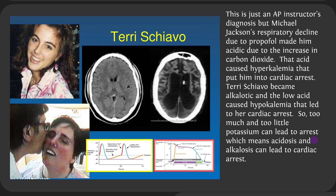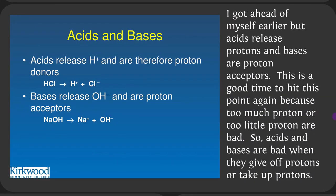As a clinical example: Michael Jackson's respiratory decline due to propofol made him acidic due to increased carbon dioxide. That acid caused hyperkalemia, putting him into cardiac arrest. Terry Schiavo became alkalotic, and the low acid caused hypokalemia, leading to her cardiac arrest. Too much and too little potassium can both lead to cardiac arrest, which means acidosis and alkalosis can both lead to cardiac arrest.